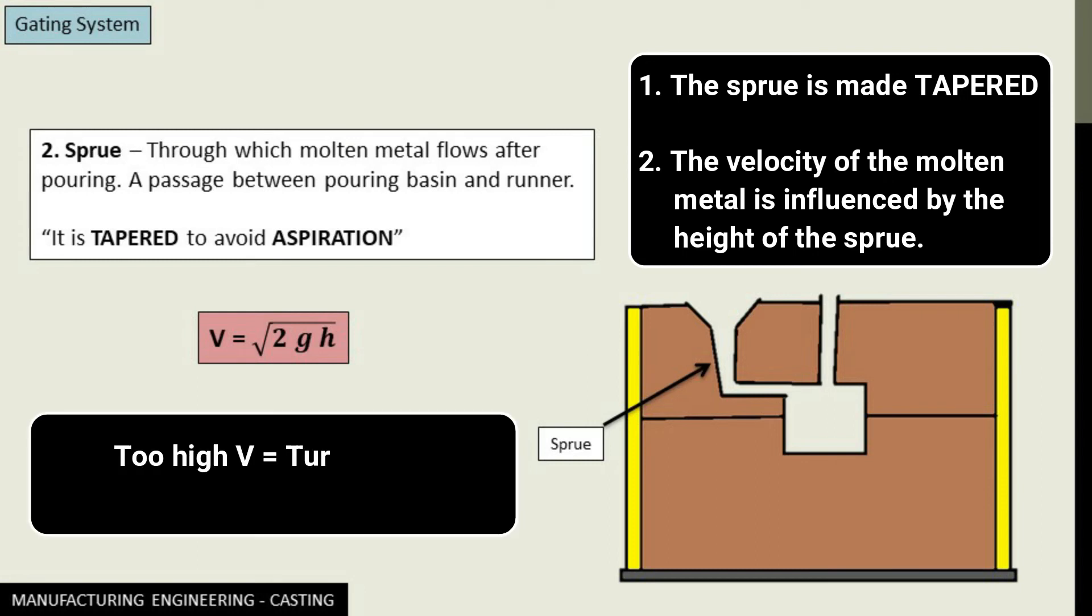Now the velocity of the molten metal should not be too much low or too much fast. It should be optimum enough so that the solidification takes place perfectly. If the velocity is too much low, the solidification will start early and hence it will solidify in some undesirable places.